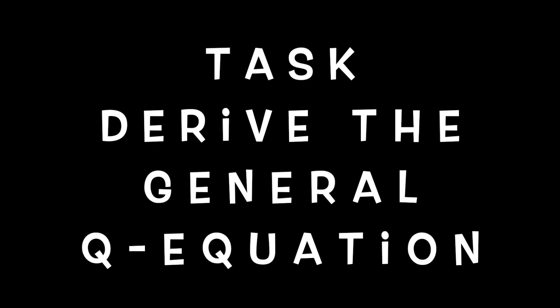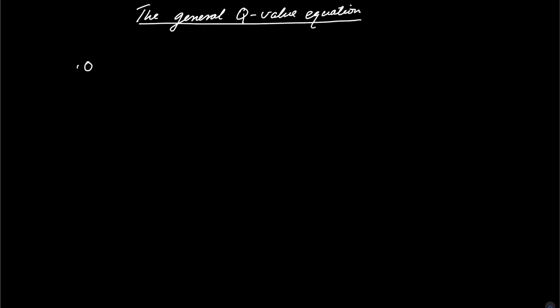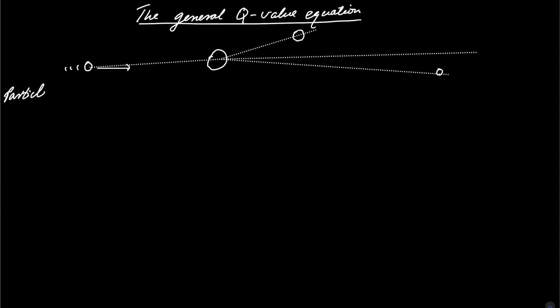Now that we've covered some background, let's derive a general equation for obtaining Q, especially for experimental setups. We start by imagining a small particle A moving at high speed and bombarding a larger particle X. Particle X then splits into a daughter nucleus Y and another small particle B.